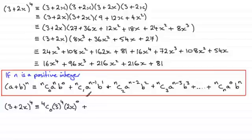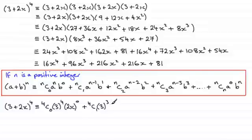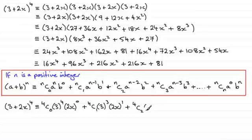The next term will be 4C1; then a, which is 3, is reduced by 1 power so it's now 3 to the power 3. Then we increase b, which is 2x, by 1 power — so it was 0, so it's now up to 1. The next term is 4C2; reduce the power on the 3 to 3 squared, increase the power on 2x so it is now (2x) all to the power 2.